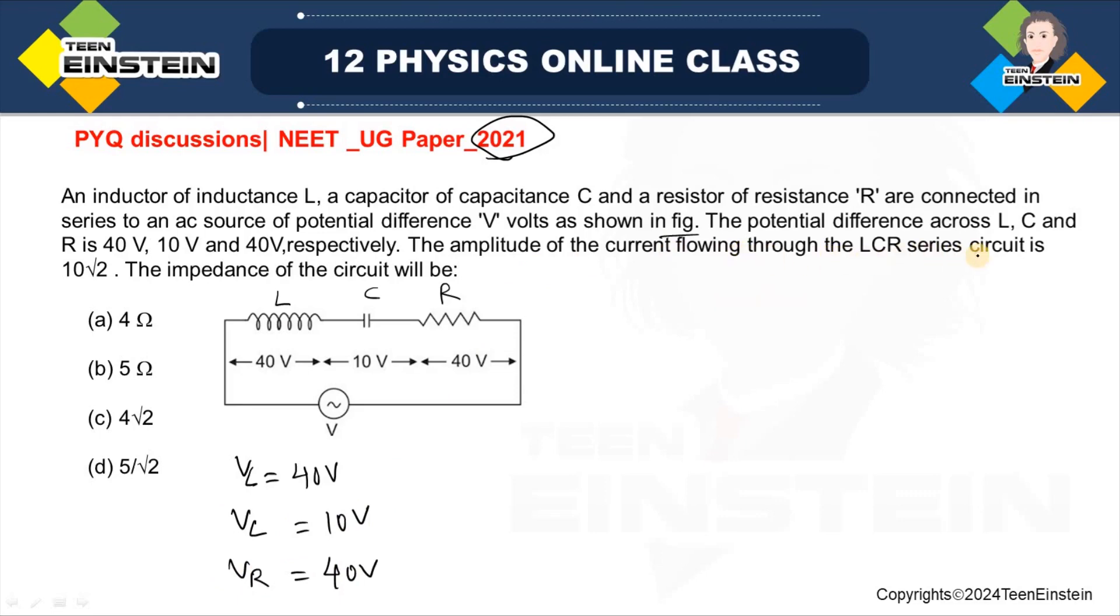The amplitude of the current flowing through the LCR series circuit is 10 root 2 amperes. That means, you have been given I0 is equal to 10 root 2. So, what we have to find out? We have to find out the impedance of the circuit. Here, there are four options. You have to find out the correct out of these.